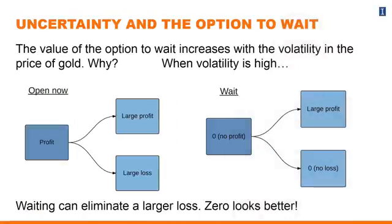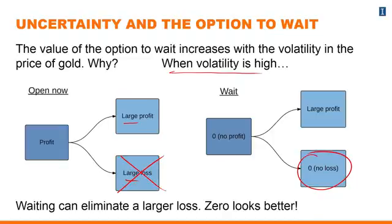Before we end, two important ideas. First, the value of the option to wait depends on the amount of uncertainty — in this case, the volatility of the gold price. If gold prices are extremely volatile, large fluctuations cause very large profit gains and very large losses. If you wait and only open the mine tomorrow, you avoid the state of the world where the price is very low and you're stuck with an unprofitable mine. Waiting eliminates that large loss: if you were going to lose money, zero looks great.